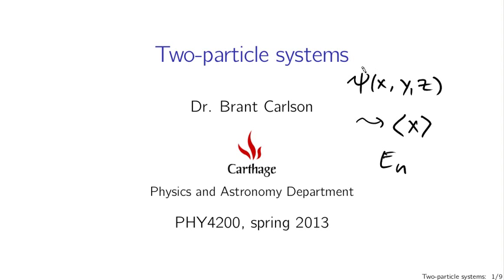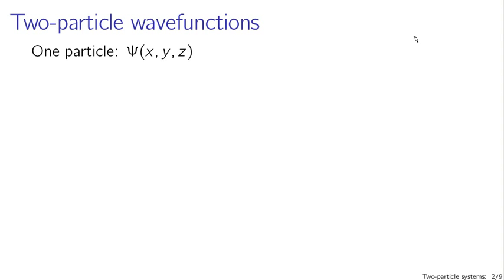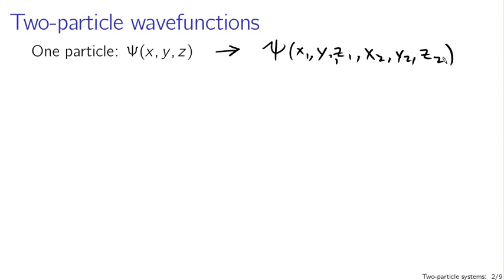The first step is to expand our formalism of wave functions to two-particle systems. For a one-particle wave function psi of x, y, z, if we're working with two particles, we no longer have the position of just one particle. The wave function psi is a function of six variables: x1, y1, z1, and x2, y2, z2. What we get is a joint probability distribution for the position of both particles. This is part of what makes quantum mechanics so difficult to compute with, since representing functions of many variables in a computer is a very difficult proposition.